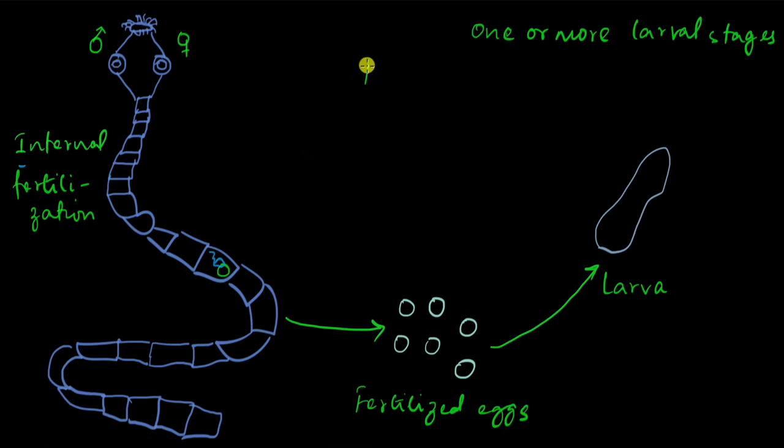So maybe more than one host. So after going through all that, different larval stages and then more than one host, finally the larva grows up to be the adult platyhelminth. In this case, the tapeworm.